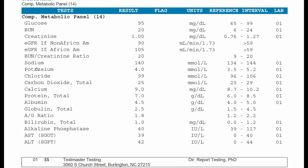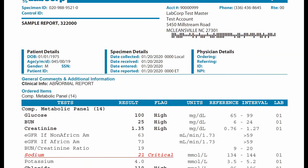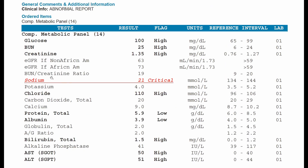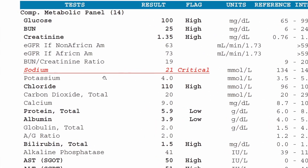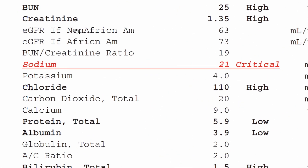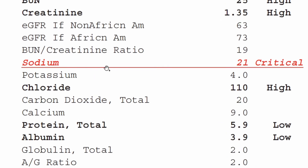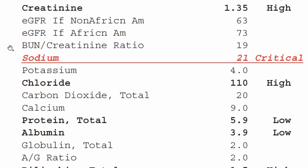If any of these electrolytes are off — if just a single one is off and nothing else is wrong — it's probably no cause for concern. But if we have several off, here's an example of an abnormal test: sodium is critically low, chloride is high, and we've got elevated creatinine. So we know there's something going on with the kidneys — they're not filtering properly, there's some obstruction, and their ability to balance out the electrolytes is hindered. In this case, it could be due to a cardiovascular issue or a kidney issue.